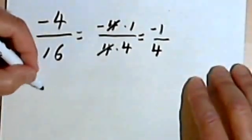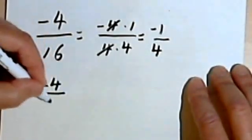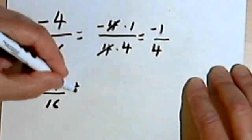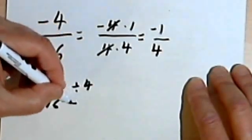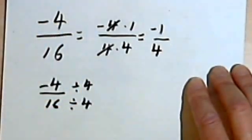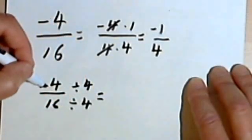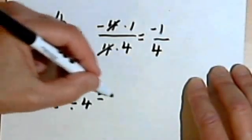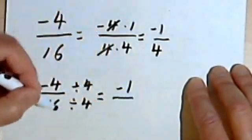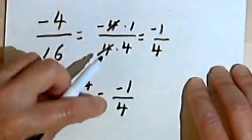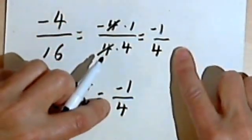Thinking of this in terms of division, if I have negative 4 over 16, I'll divide the numerator by 4 and the denominator by 4, and I'll get the same answer. Negative 4 divided by 4 is negative 1. 16 divided by 4 is 4. Either way, I get negative 1 quarter.